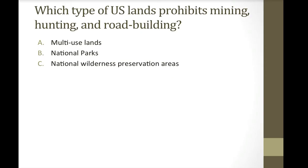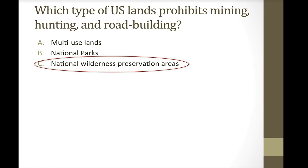Quiz question for U.S. lands: which type prohibits mining, hunting, and road building? Is it A, multi-use lands; B, national parks; or C, national wilderness preservation areas? The correct answer is national wilderness preservation areas. National parks also prohibit mining and hunting, but national wilderness areas additionally prohibit road building. On multi-use lands like national forests, mining, hunting, and road building are all allowed.